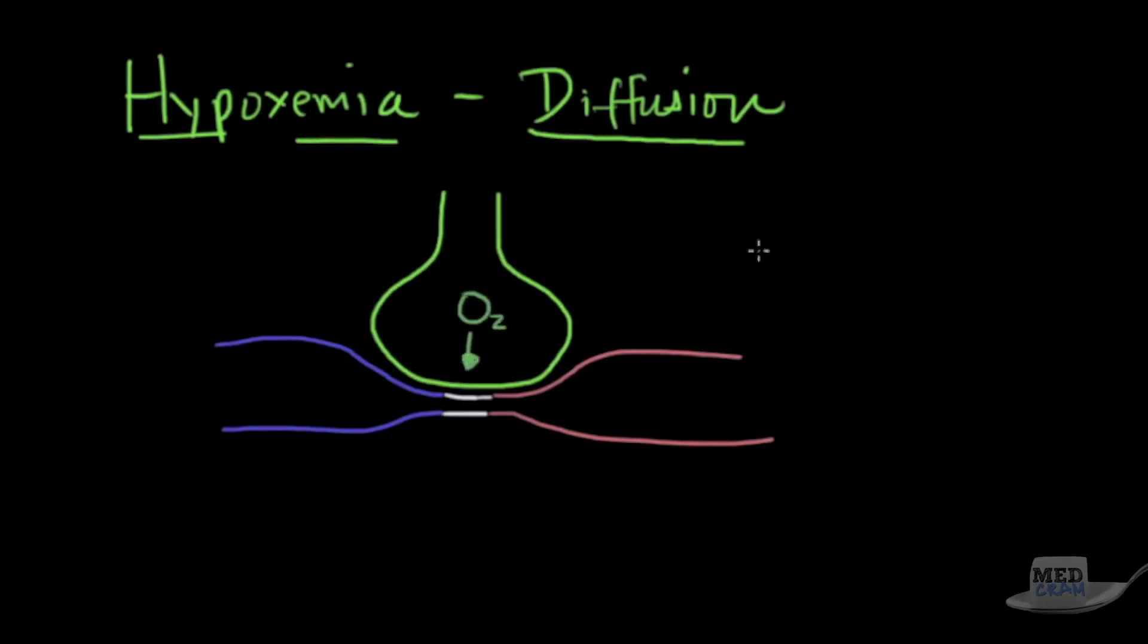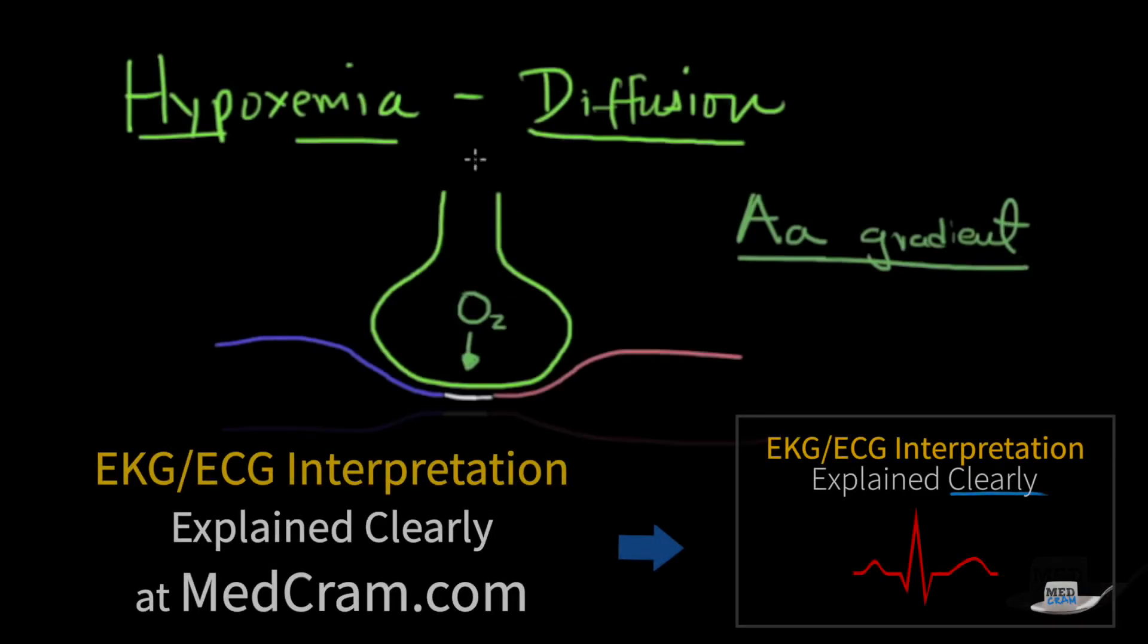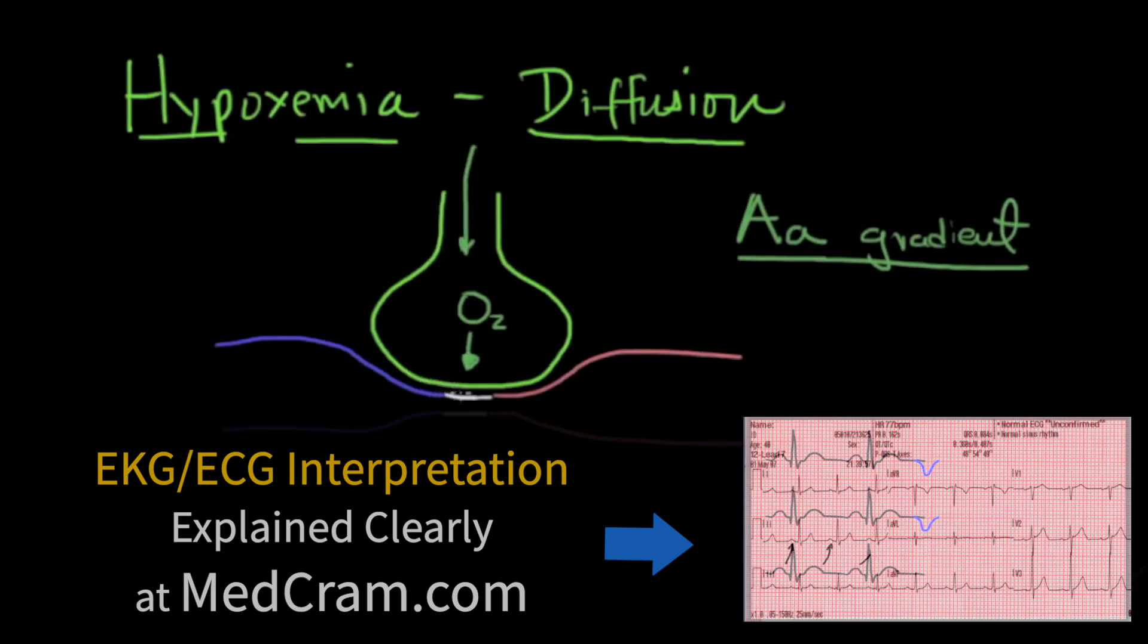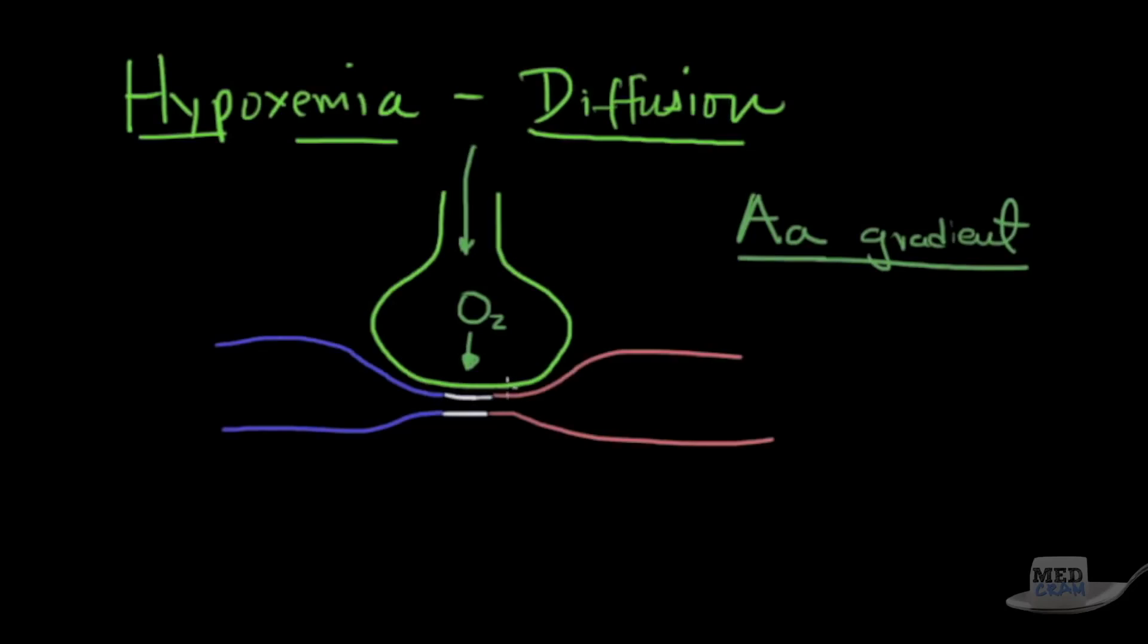We've got oxygen coming down into this area, and then there's something we should talk about called the capital A, lowercase a gradient. Oxygen is going to come in into the alveolus and diffuse past this one cell layer thick epithelium, which is the epithelium of the lung. Then it's going to go through this one cell layer thick endothelium, which is going to then go into the pulmonary artery, pulmonary capillary, and then pulmonary vein, which is going to become oxygenated.